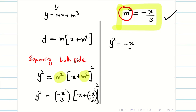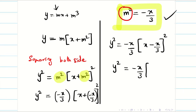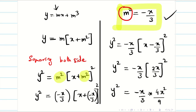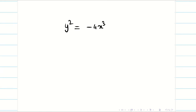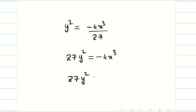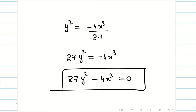So y² = (−x/3)(x − x/3)², which gives y² = (−x/3)(4x/3)² = (−x/3)(4x²/9). Therefore y² = −4x³/27. Simplifying: 27y² = −4x³, and therefore 27y² + 4x³ = 0. This is the envelope for the given problem y = mx + m³.